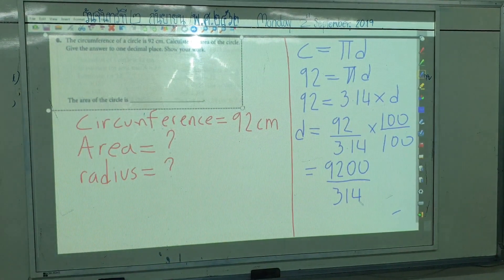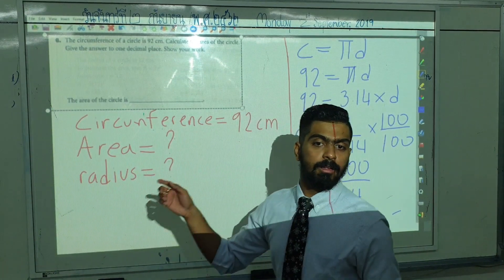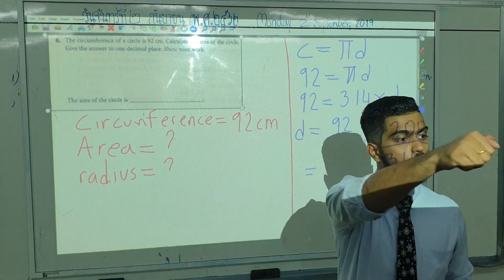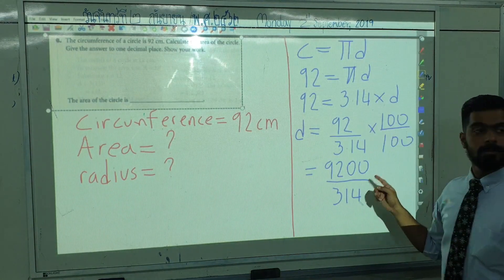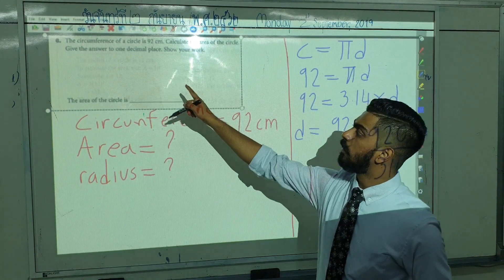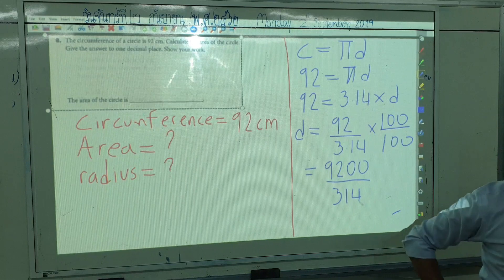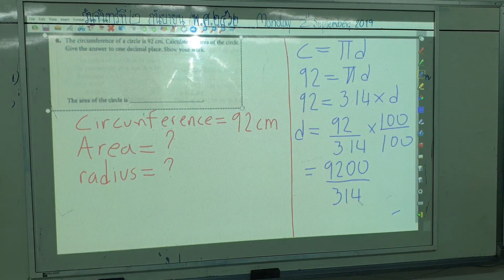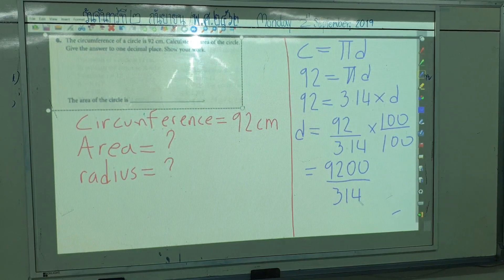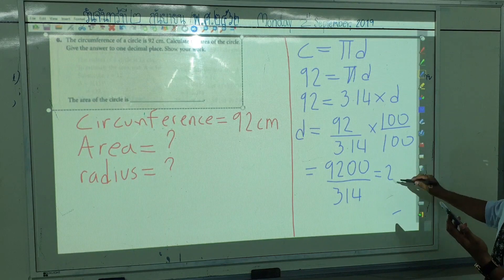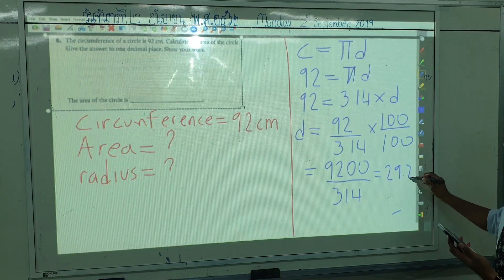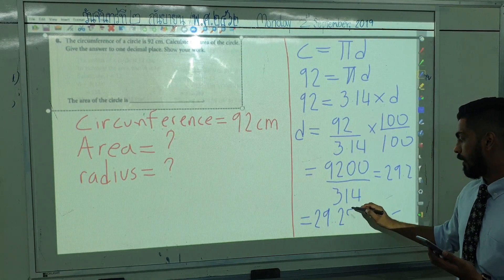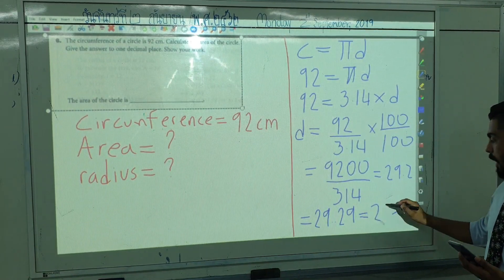Can anyone calculate that on the calculator? The answer is 29.29. Now we round it to one decimal place — 29.29 rounded to one decimal place is 29.3.